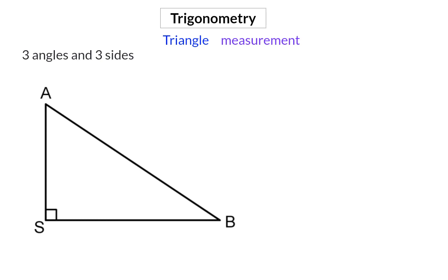When naming the angles in a triangle, we use capital letters, and for the sides, we have two different methods.